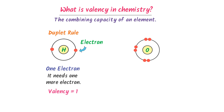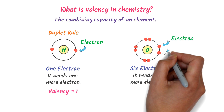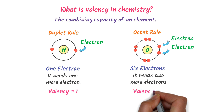On the other hand, we can see that there are six electrons present in the outermost shell of oxygen atom. This oxygen atom needs two more electrons to gain stability. After gaining two electrons, the octet rule of this oxygen atom is completed. So we say that the valency of this oxygen atom is two.